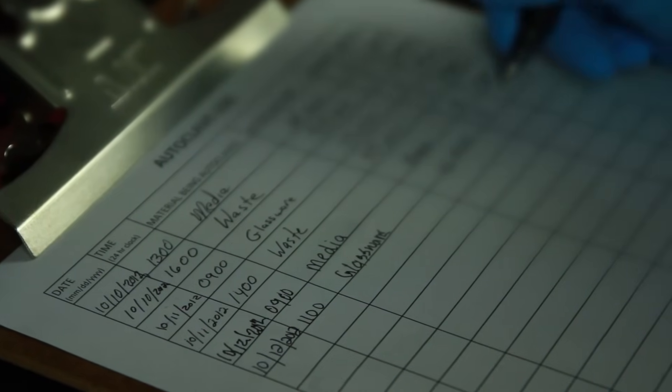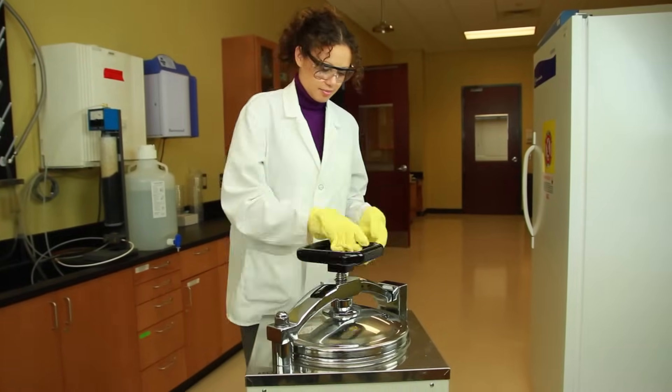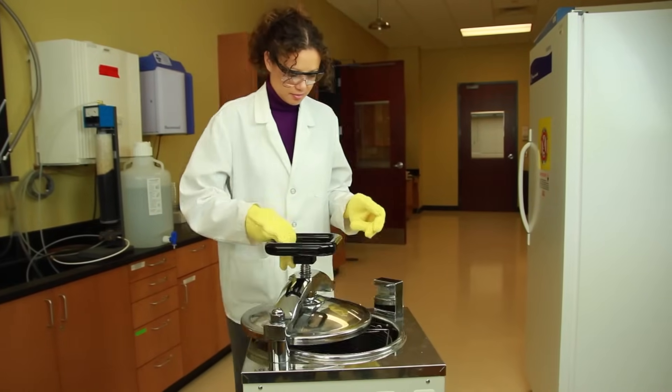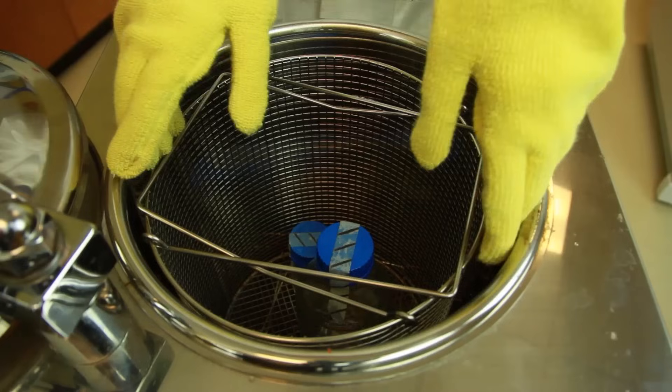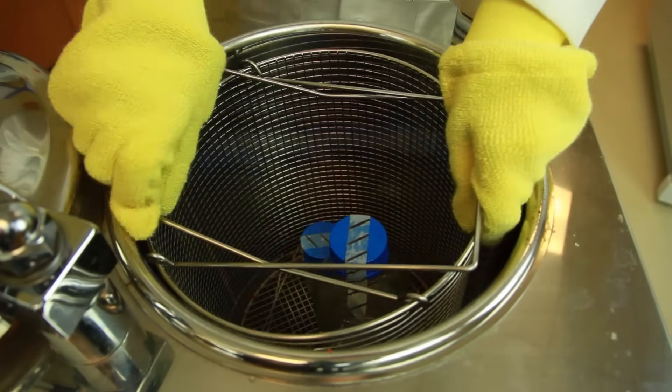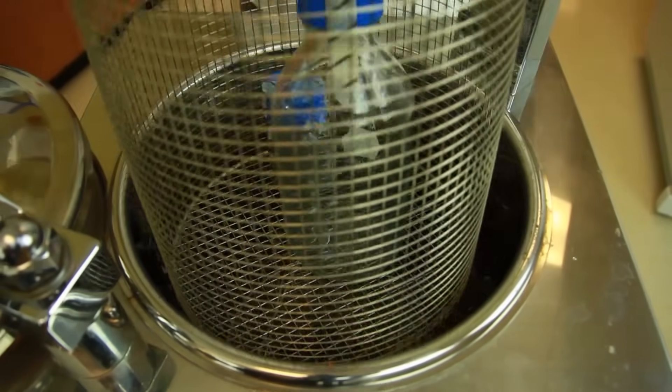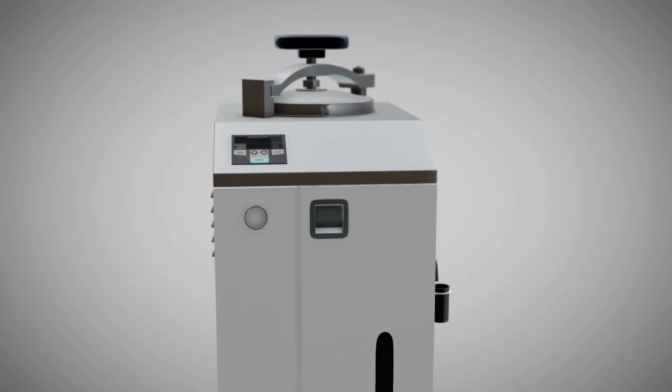Once the cycle ends and the pressure gauge reads zero psi, slowly open the door and remove the basket. The black lines are visible on the tape, indicating that the proper temperature was reached. The autoclave is now ready for another run.